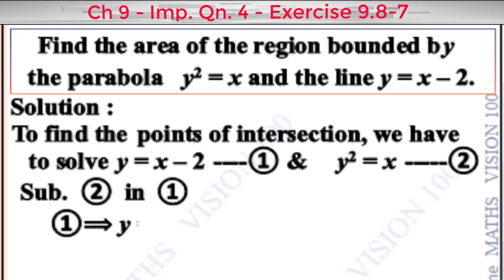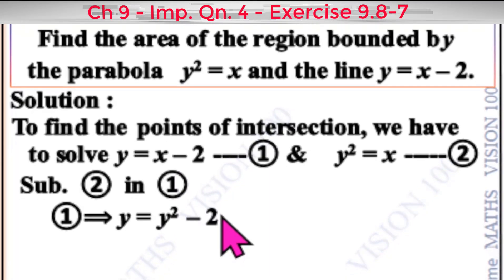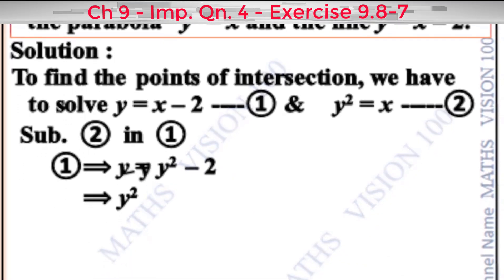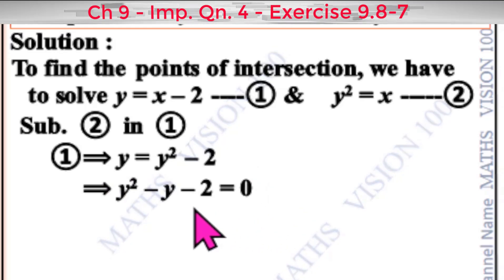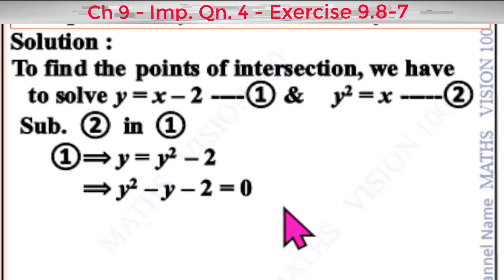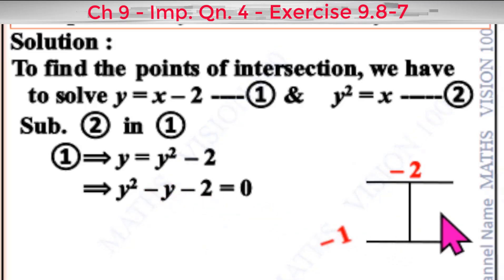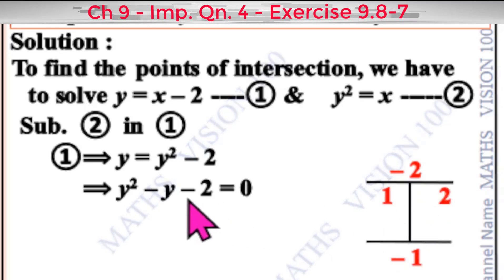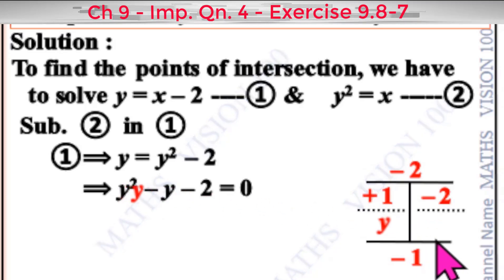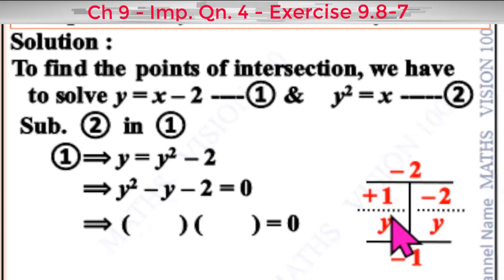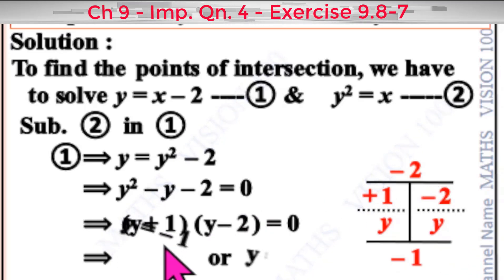From the first equation, y equals x minus 2, so x equals y plus 2. Substituting into y squared equals x, we get y squared equals y plus 2. Rearranging: y squared minus y minus 2 equals 0. Factorizing this gives factors y plus 1 and y minus 2, so y equals minus 1 and y equals plus 2.